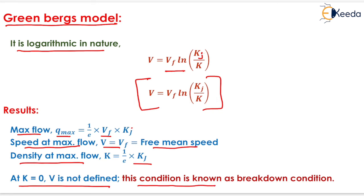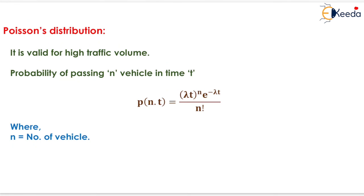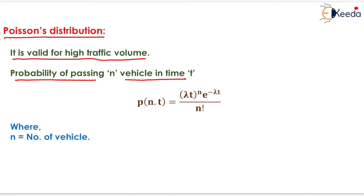The next topic is Poisson's distribution. It is valid for high traffic volume. The probability of passing n vehicles in time t equals lambda into t to the power n, multiplied by e to the power minus lambda t, upon factorial n, where n is the number of vehicles.